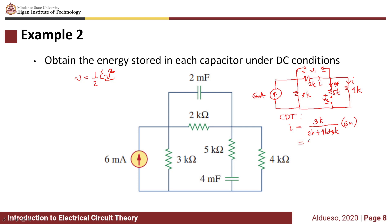Voltage V1 is equivalent to, by Ohm's law, 2k times i — so this is equivalent to 4 volts. Now for voltage V2: we know the current at the 5k resistor is zero, so V2 is just equivalent to the voltage across the 4k resistor. We have V2 equivalent to 4000 times i, so this is equivalent to 8 volts.